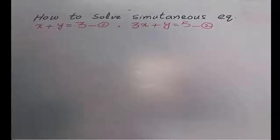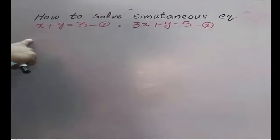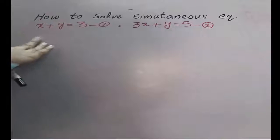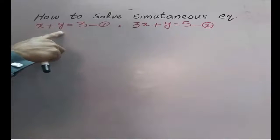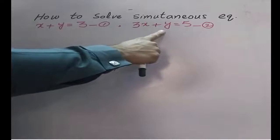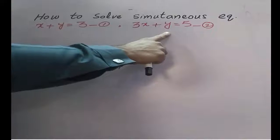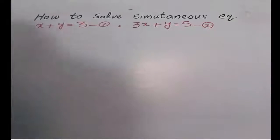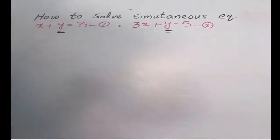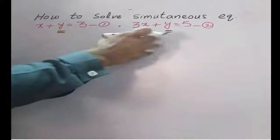While solving equations simultaneously, we have to eliminate x or y, either x or y. Look at the coefficient of x is 1, the coefficient of y is 1. Here the coefficient of x is 3 and the coefficient of y is 1. The coefficient of y is 1 in both equations. Now simply plus or minus the equations.